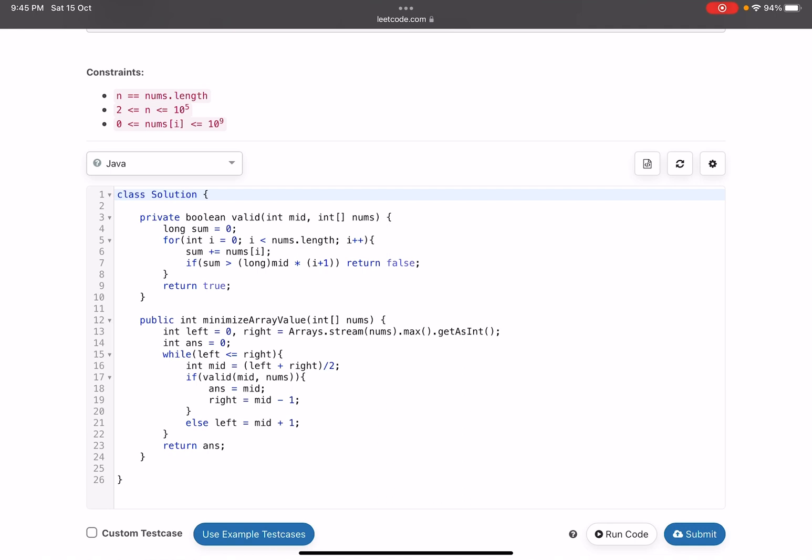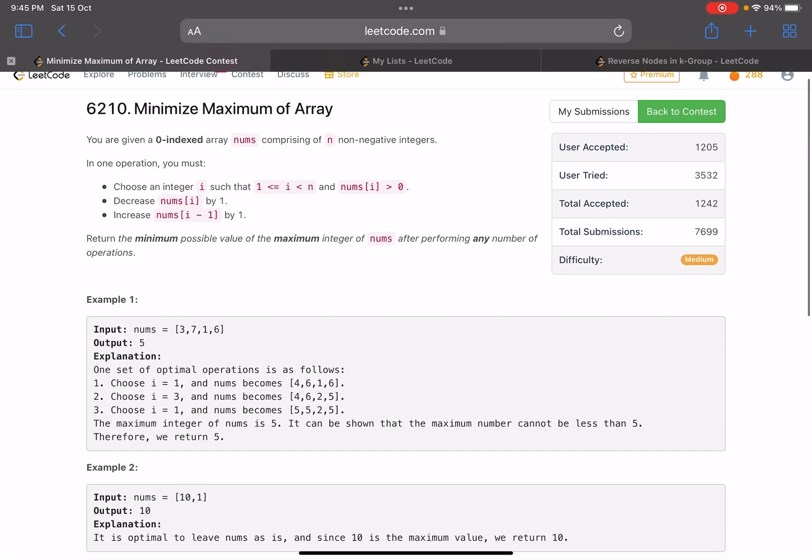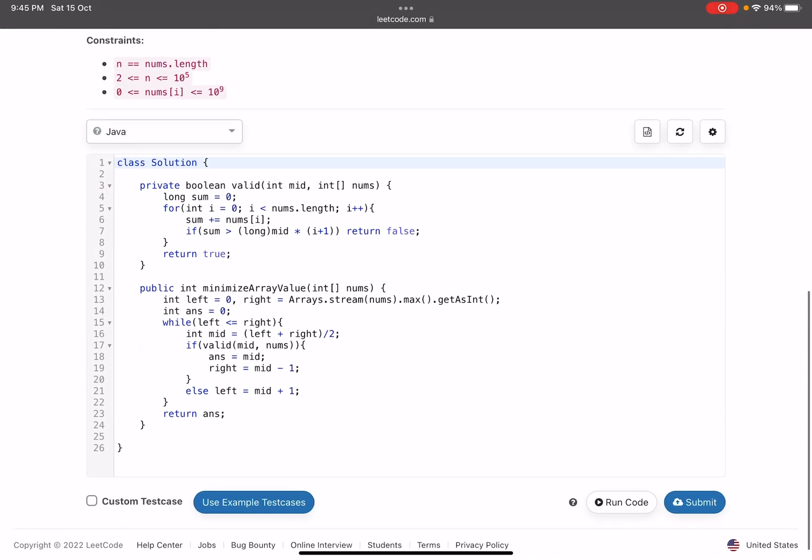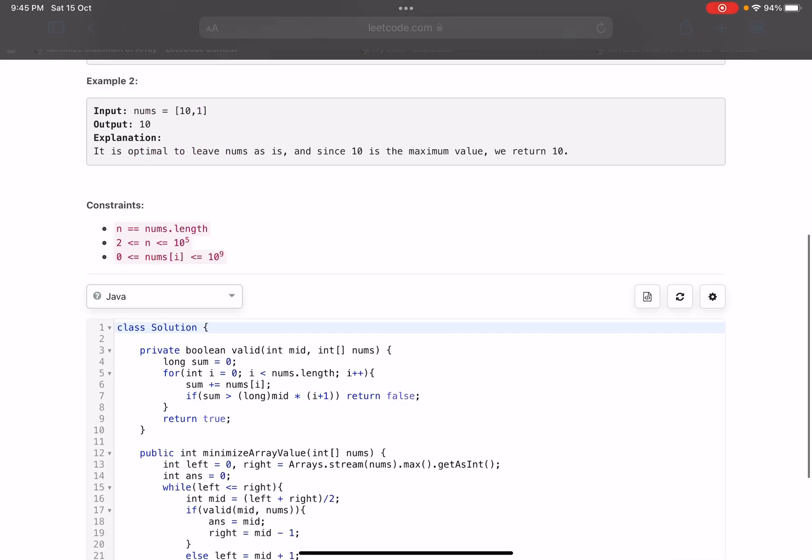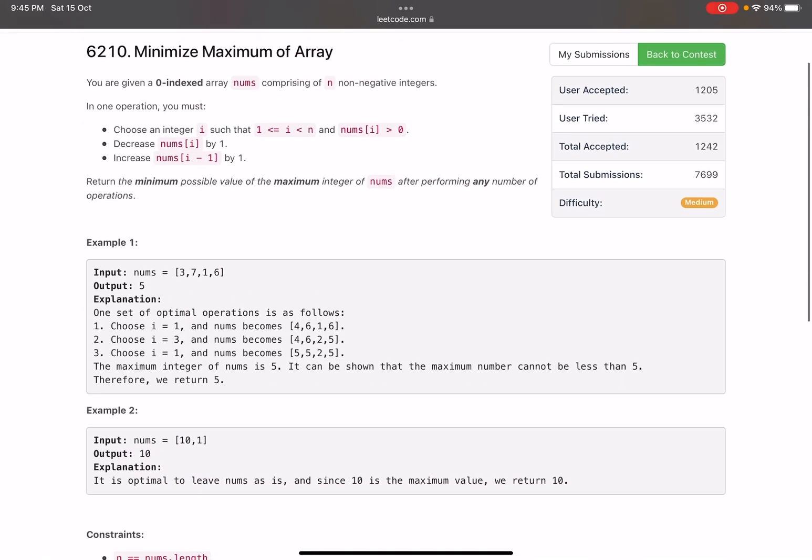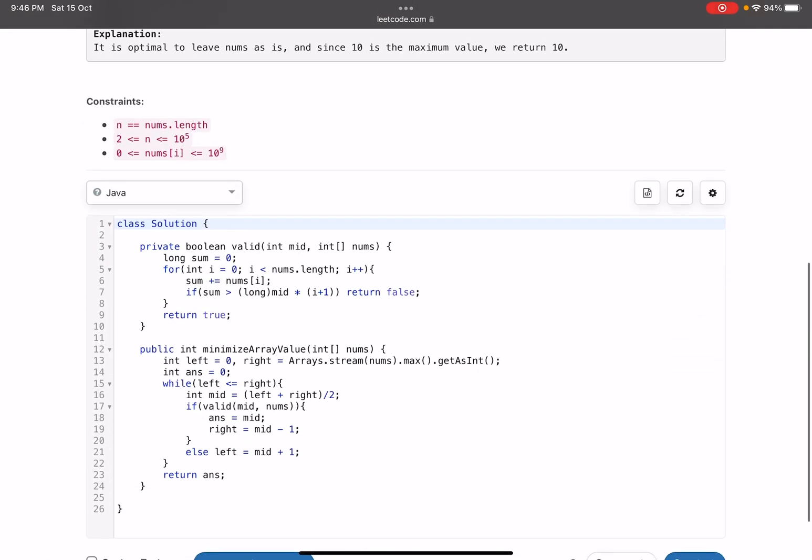Now, on line number 17, if this was a valid case, your answer is updated to mid, right becomes mid minus 1, else left equals to mid plus 1, you keep on doing this, and finally you return the answer. So, yeah, this was the solution, again, the accuracy of this one is pretty low, I think, again, it depends how you tackle this type of question. Binary search is one of the best ways to tackle this. Otherwise, probably some of you might have thought that we can take a priority queue and something like that. But this one seems to be the simplest approach.